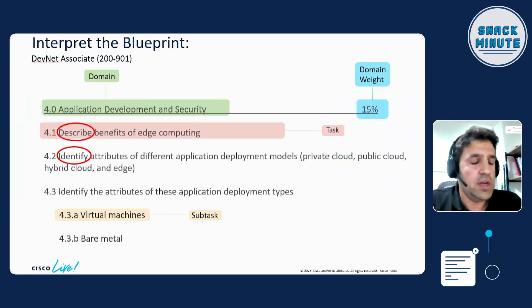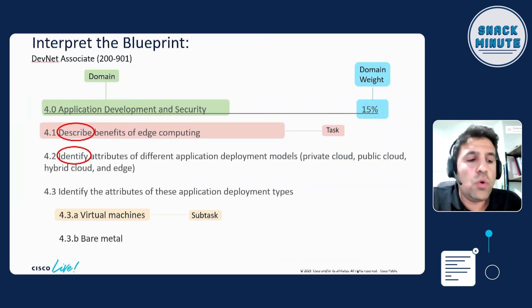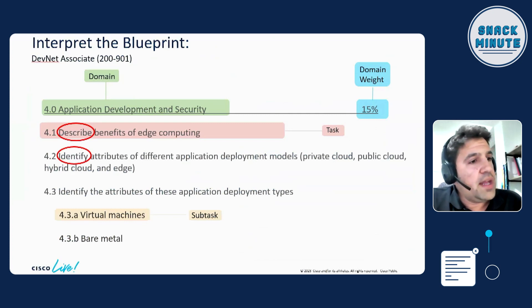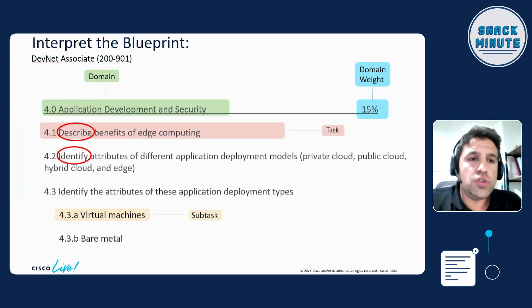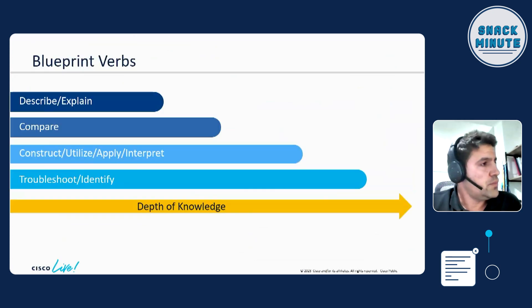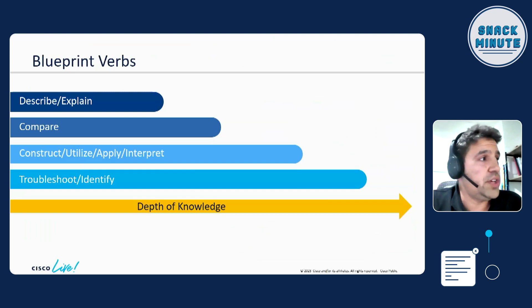There is something we use within Cisco — not only for DevNet certifications but across all certifications we develop — called cognitive complexity. Cognitive complexity is used within the educational sector as a way to set the difficulty or depth of knowledge needed for specific topics using verbs. I created a slide showing the depth of knowledge for each verb, specific to DevNet Associate, but you can apply it across all Cisco certifications.